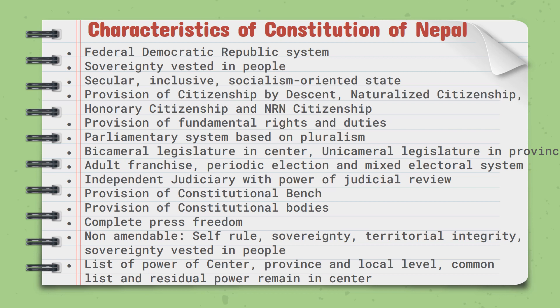Further characteristics include: provision of fundamental rights and duties, parliamentary system based on pluralism, bicameral legislature at the centre, unicameral legislature in the province, adult franchise, periodic election, mixed electoral system, independent judiciary with power of judicial review, provision of constitutional bench, provision of constitutional bodies, and complete press freedom.